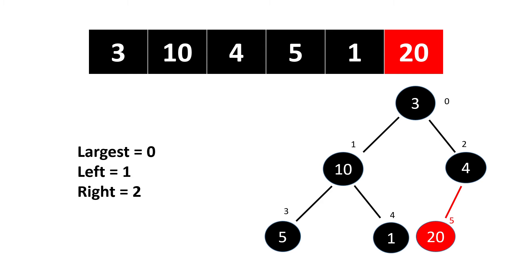We make largest index zero, left becomes index one, and right becomes index two. We check if the element at index one is greater than the element at index zero — yes, ten is greater than three — so our largest becomes index one. Then we swap the element at index one and the element at index zero.